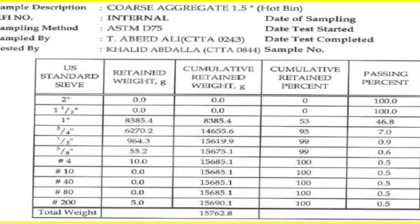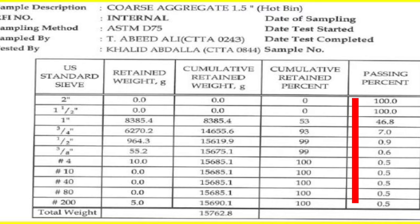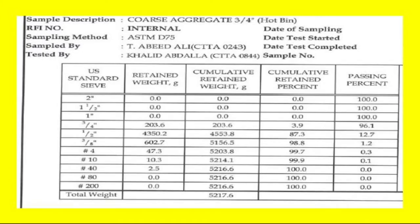For example, for the 1.5-inch aggregate, select the passing percentage from the sieve analysis report. Similarly, for aggregate size 1-inch, select the passing percentage from the report, and for 3/4-inch, select the passing percentage from there as well.